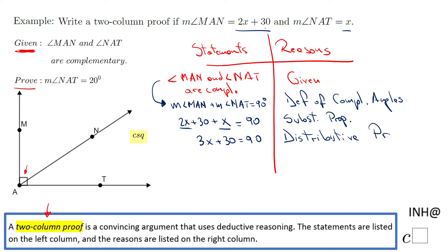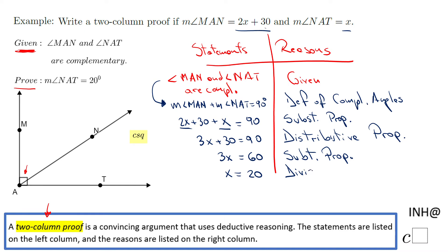The next step is to subtract 30 from both sides, and we get 3x equals 60 — because 90 minus 30 is 60. The reason is the subtraction property of equality. Then we divide by 3 to solve for x, and we get x equals 20. That is the division property of equality.